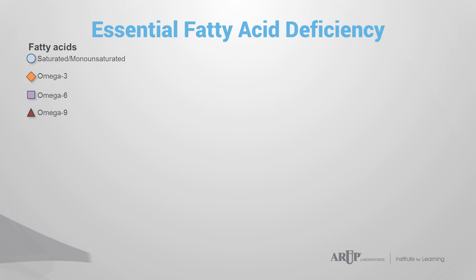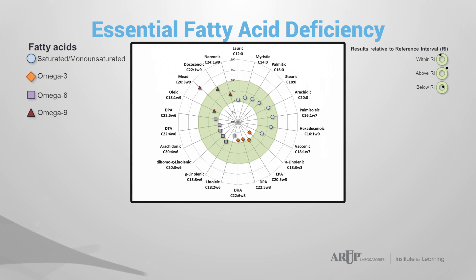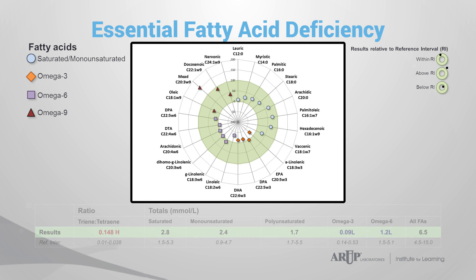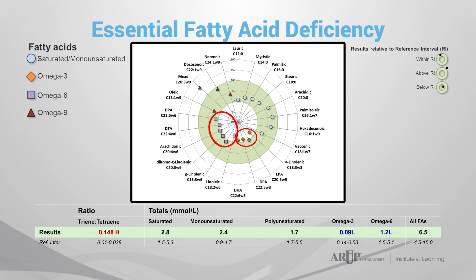To illustrate the importance of the triene:tetraene ratio, let me demonstrate two examples using radar charts of actual clinical results. The fatty acid profile in the first sample shows a pattern consistent with essential fatty acid deficiency. While all saturated and monounsaturated fatty acids are within the reference interval — represented here in green — omega-3 and omega-6 fatty acids are low, with elevated concentration of mead acid and an increased triene:tetraene ratio.